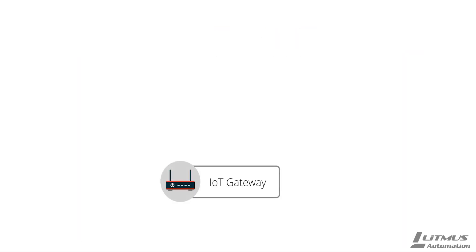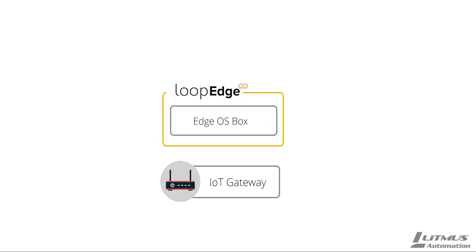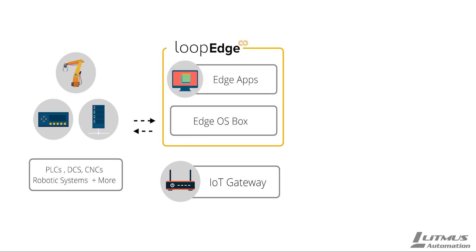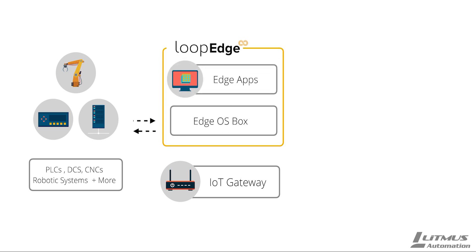Out of the box, LoopEdge can be installed on any IoT gateway or industrial PC as a complete OS, providing seamless and secure connectivity to all your brownfield or greenfield industrial devices and systems, such as PLCs, DCS, CNCs, robotic systems, and many more, with access to over 45 pre-included applications and solutions from the LoopEdge marketplace.